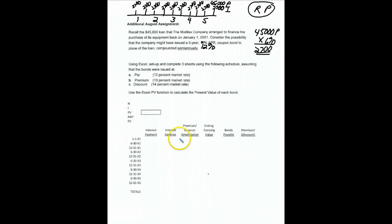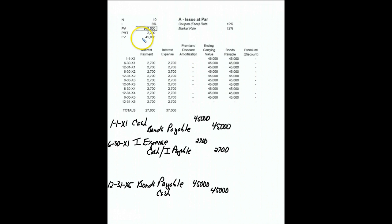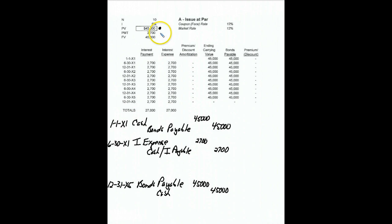In the first scenario, when you enter it in your amortization table, you've got 10 periods. The market rate was also 12%, so that's 6% semi-annually. You should have a formula here for your present value, and you should arrive at $45,000 for that. The payment is $2,700 and the principal is $45,000. When you fill out your amortization table, it should look like this. Let's also note that these two columns are our source for journal entries.